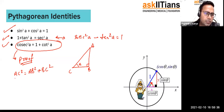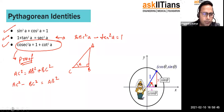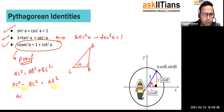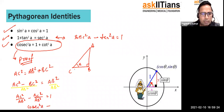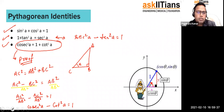Now I divide both sides by AB². I get: AC²/AB² − BC²/AB² = 1. AC/AB is cosec A, so that term becomes cosec²A. BC/AB is cot A, so we get cosec²A − cot²A = 1. That is how we prove the third identity.